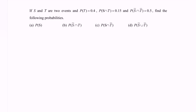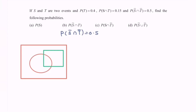Before we start our discussion, note that the probability of S complement intersect with T complement is equal to 0.5. Here we have the Venn diagram. The universal set contains a red circle denoted as set S, and a green circle denoted as set T. We label the regions as 1, 2, 3, and 4.